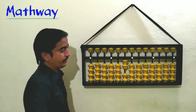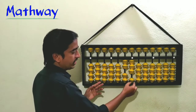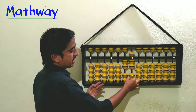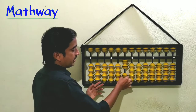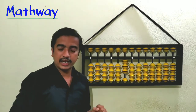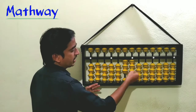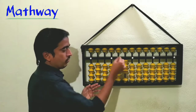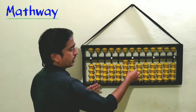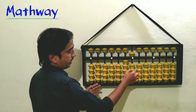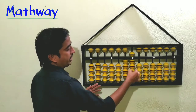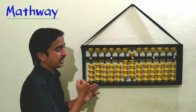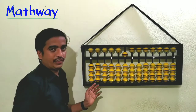To make twenty, the ones are cleared and two tens rod beads are connected to the answer line. Continuing: thirty, forty. To make fifty, the five-tenths upper bead is connected to the answer line and the ones are made zero — that is fifty. Then fifty-one, fifty-two, fifty-three, fifty-four, fifty-five, fifty-six, fifty-seven, fifty-eight, fifty-nine, sixty — built up the same way.